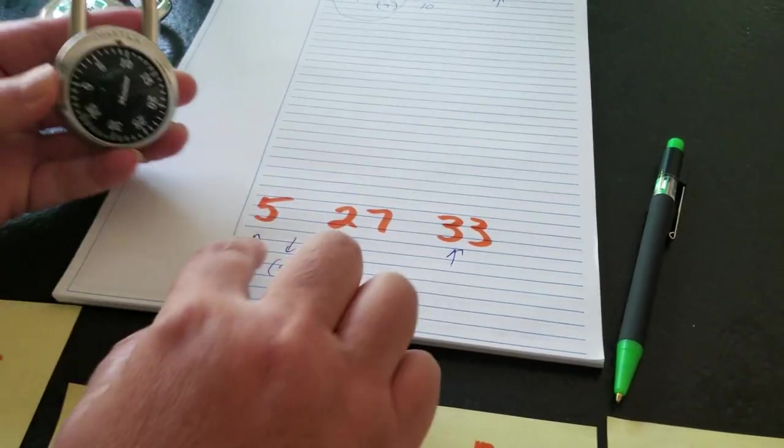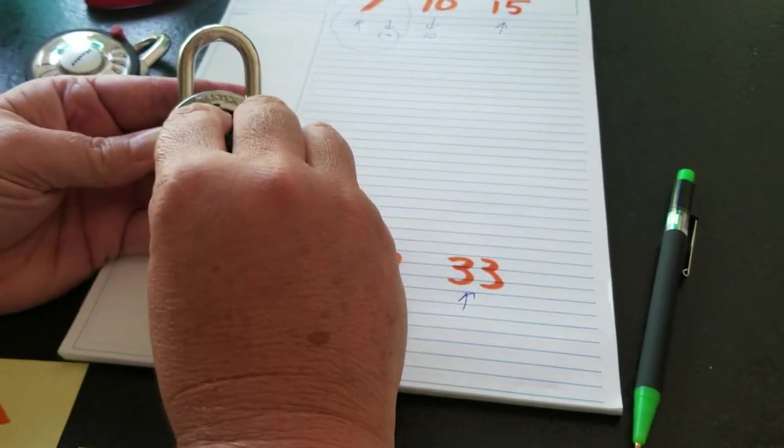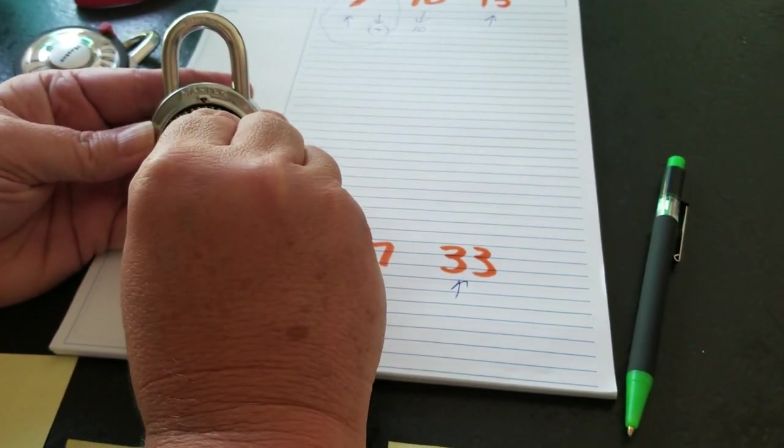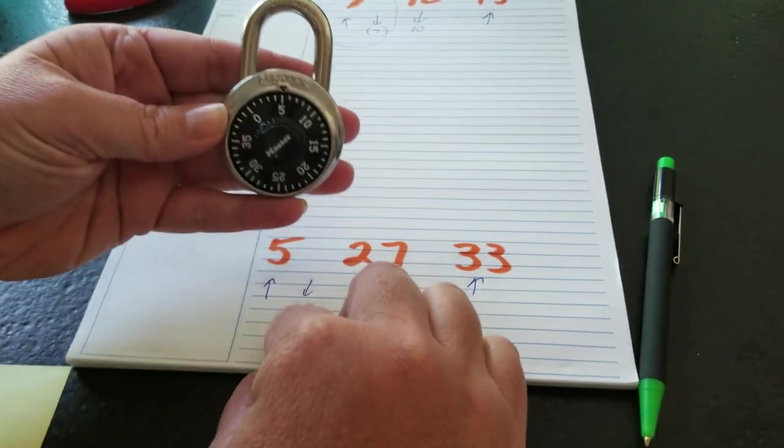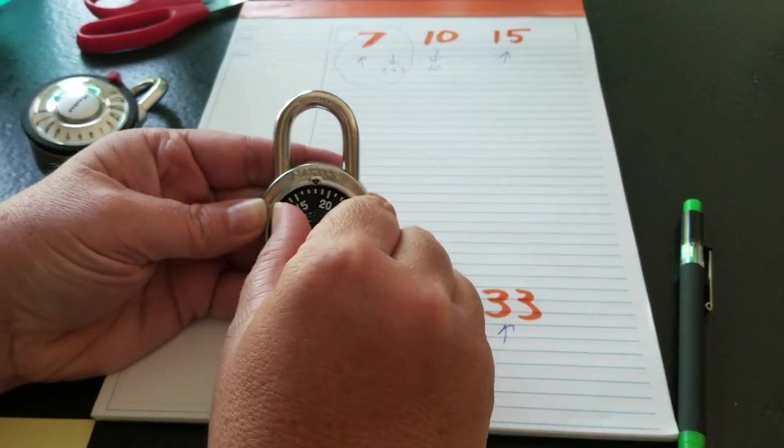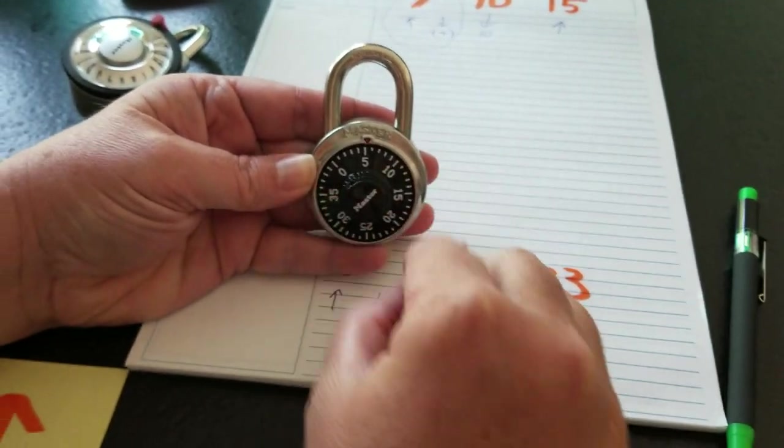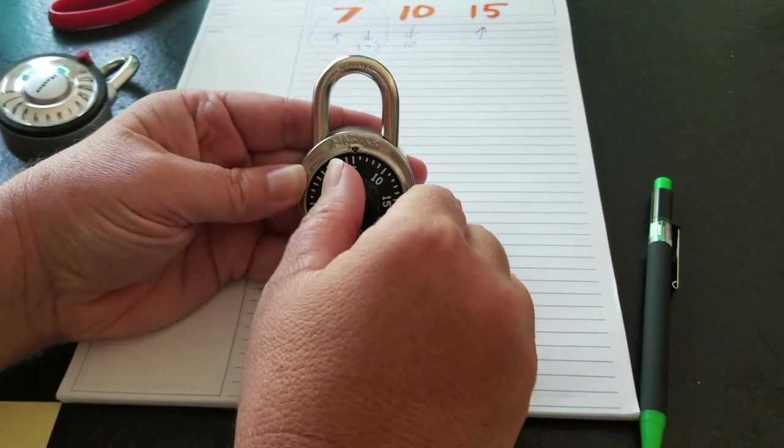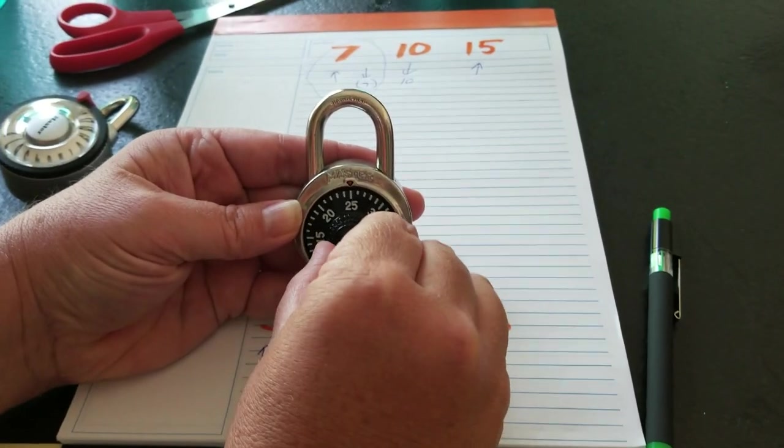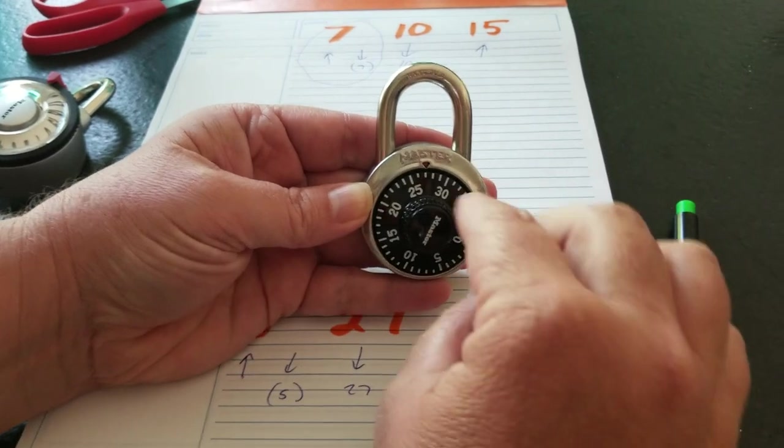So here we go, we're going to clear the lock. First number's 5, arrow up, 5. We're going to go down past 5, down, my thumb's going down past 5, down to 27, and then back up to 33.